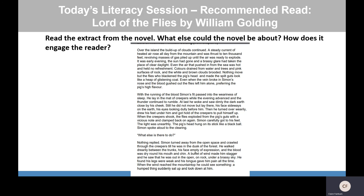Simon carefully got to his feet. The light was unearthly. The pig's head hung on its stick like a black boar. Simon spoke aloud to the clearing: 'What else is there to do?' Nothing replied. Simon turned away from the open space and crawled through the creepers till he was in the dusk of the forest. He walked dully between the trunks, his face empty of expression and the blood was dry around his mouth and chin. A buffer of wind made him stagger and he saw that he was out in the open on rock under a brassy sky. He found his legs were weak and his tongue gave him pain all the time. When the wind reached the mountaintop he could see something — a humped thing suddenly sat up and looked down at him. It's quite an intriguing, quite a mature, quite a difficult piece of reading. What do you think the novel could be about and how does it engage the reader?